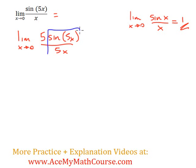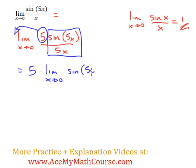Now, of course, I want to make this look like that as much as possible. So I'll take the 5 out. I can just do that because we're multiplying, so I can take out the constant and go 5 times the limit as x approaches 0 of sine of 5x over 5x.